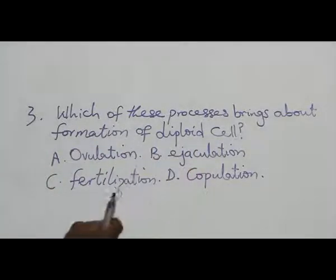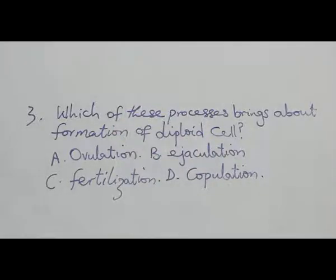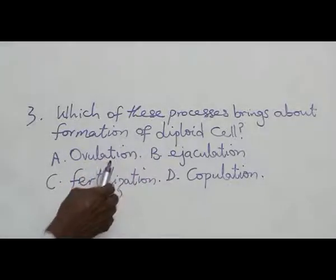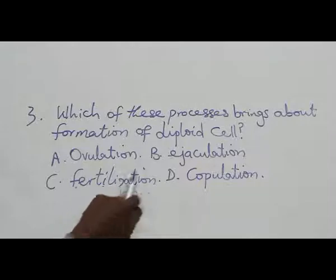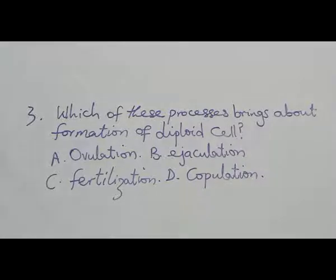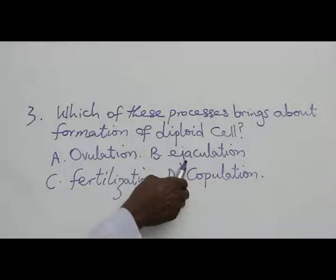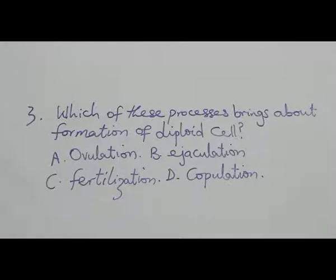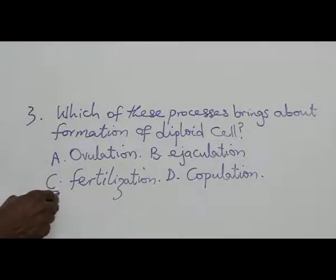A diploid cell is a cell where pairs of homologous chromosomes are found. Homologous chromosomes come from both male and female parents. Ovulation will not bring male and female chromosomes together. Ejaculation is only releasing cells with male chromosomes to the female. Copulation is a process that leads to ejaculation. It is fertilization that brings the combination of male and female gametes — the chromosomes — together. So the answer to question 3 is option C: Fertilization.